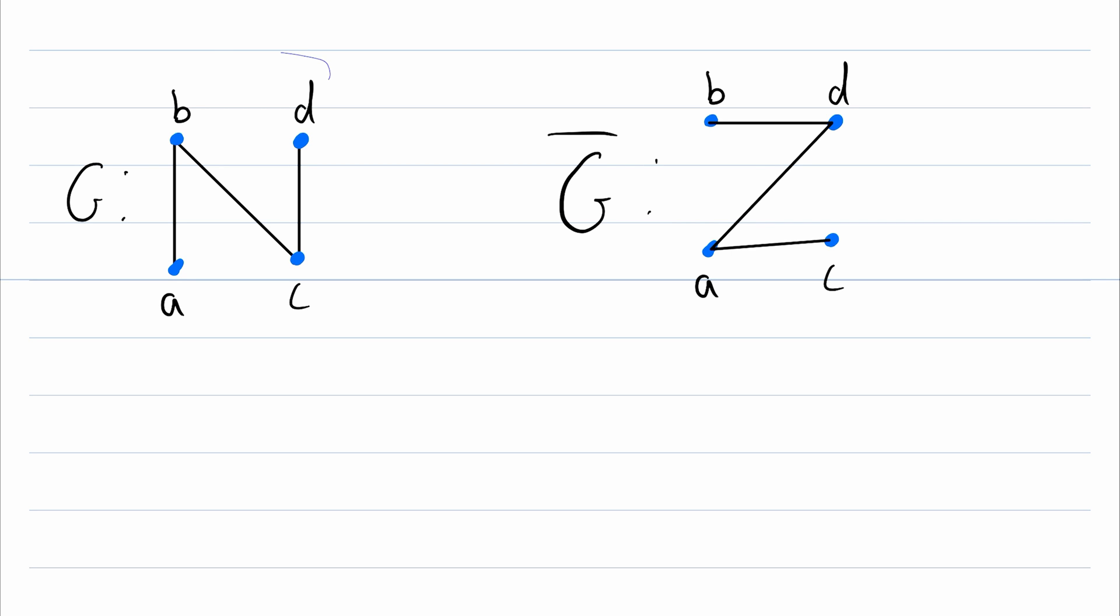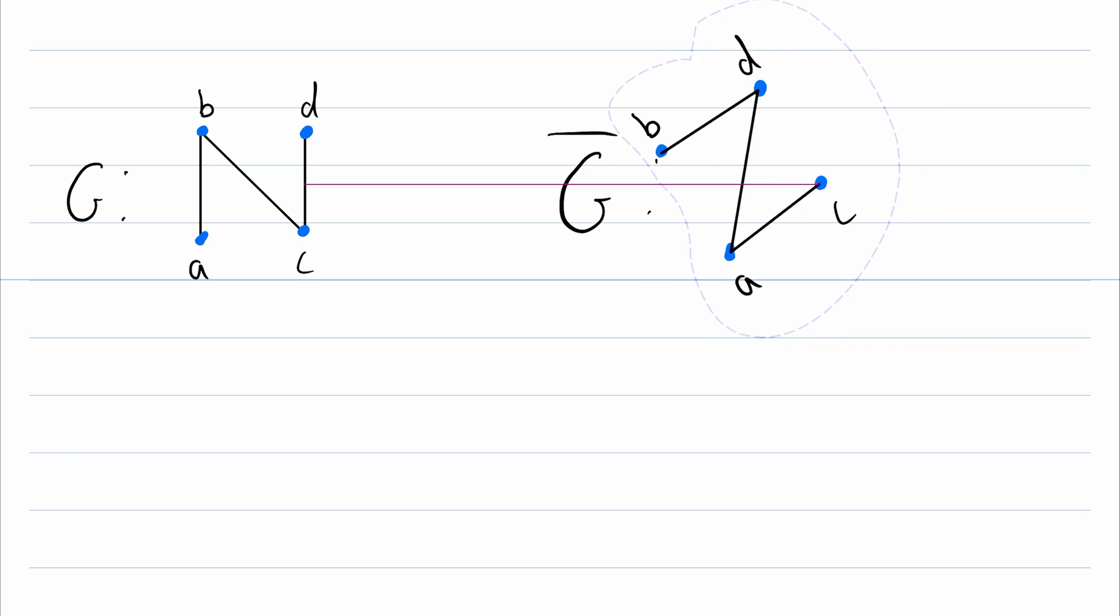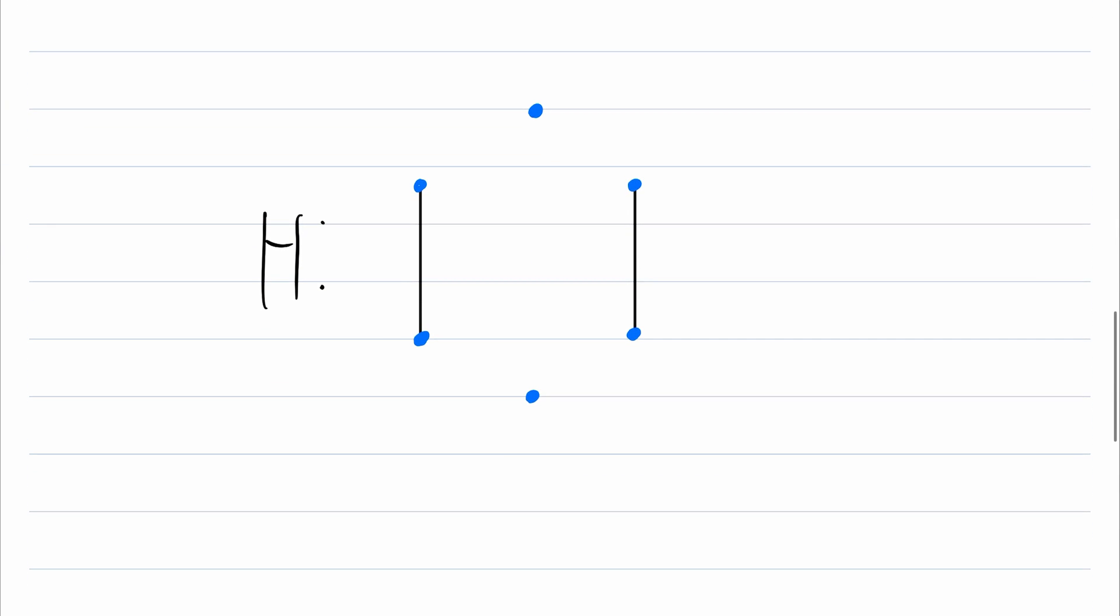And you can see that more clearly if I rotate G. You can see it's got the exact same structure as its complement, so that's pretty cool. And also remember what I said earlier, the complement of G complement is just G, so it's also true that G complement has the same structure as its complement because its complement is G. Graphs that are isomorphic to their complement graphs are called self-complementary. So that's a pretty darn neat property.